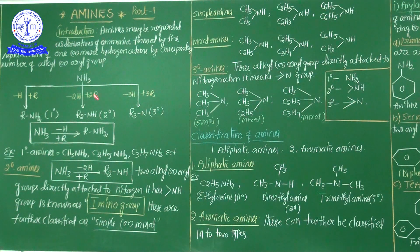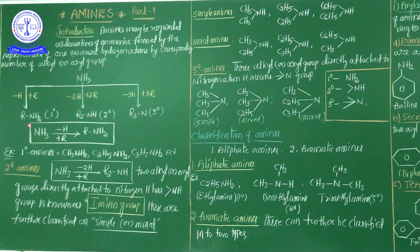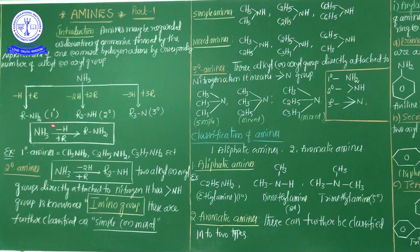From the ammonia group NH₃, one hydrogen is removed and replaced by an alkyl group or aryl group. This gives the combination R-NH₂, which is called a primary amine or one-degree amine. Whenever you see an R-NH₂ group in an organic compound, that is a one-degree or primary amine.